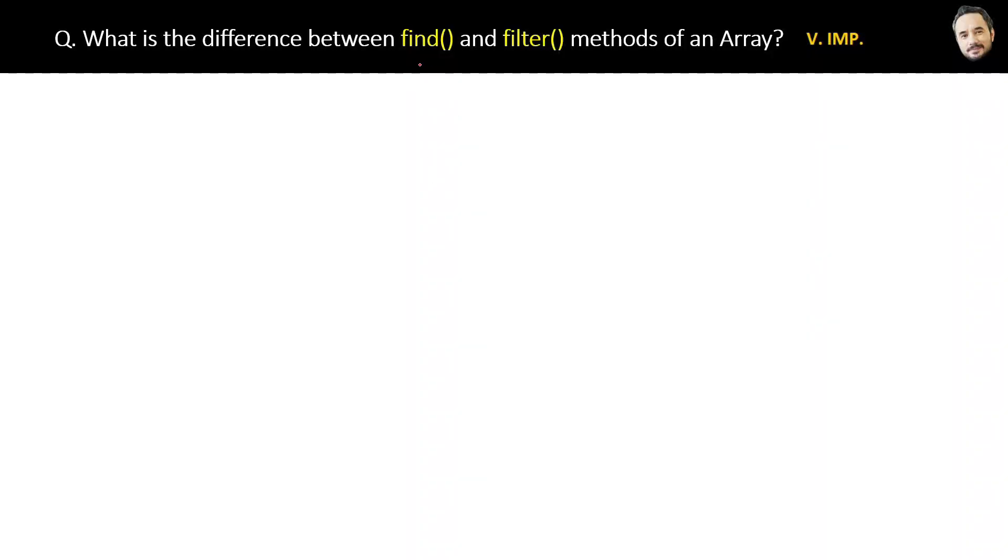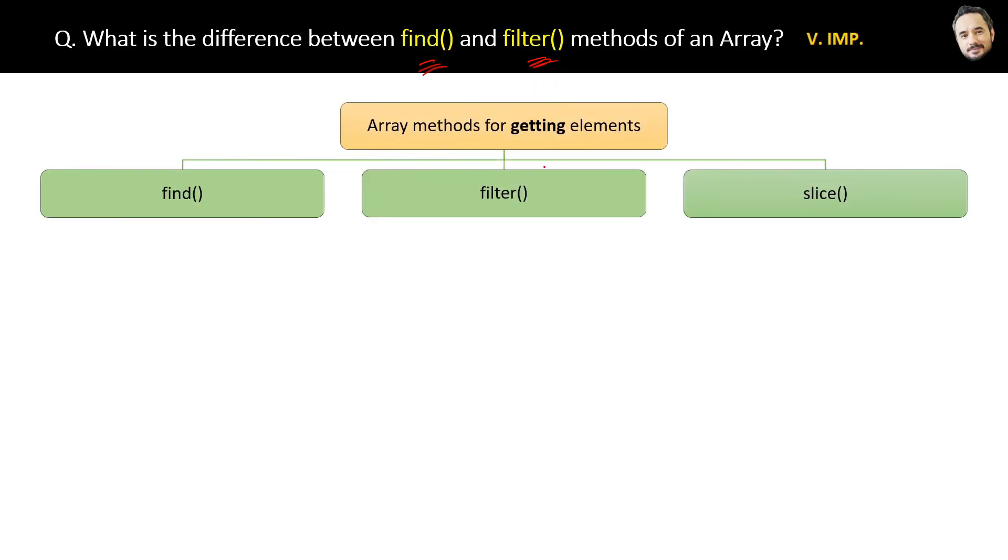What is the difference between the find and filter methods in an array? Very important question. Here is the list of get methods that are used to get elements from the array: find, filter, and slice method. Let's check out the differences between the find and filter method first.